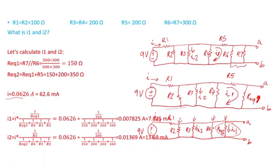For I2, which flows through R3, it's again just current division. I2 equals the source current I times one over R3, divided by the sum of all the resistances in parallel. Carrying out the calculation gives 0.01369 amps.